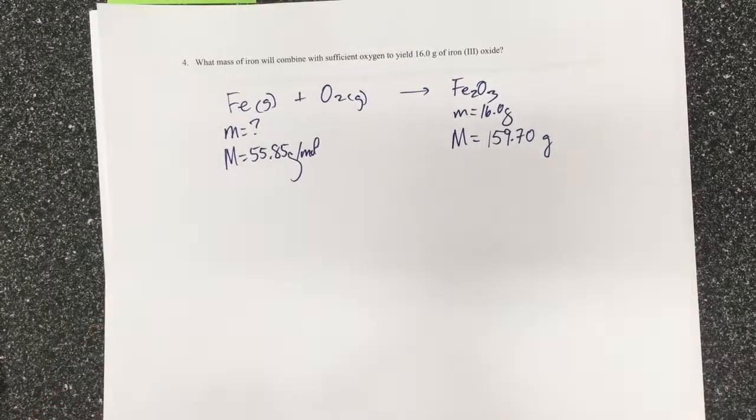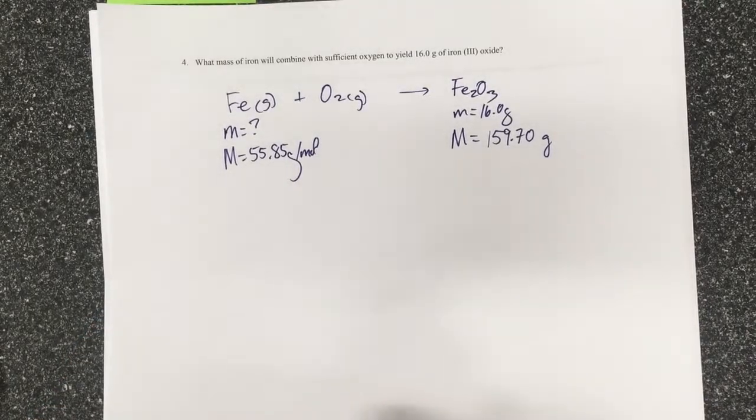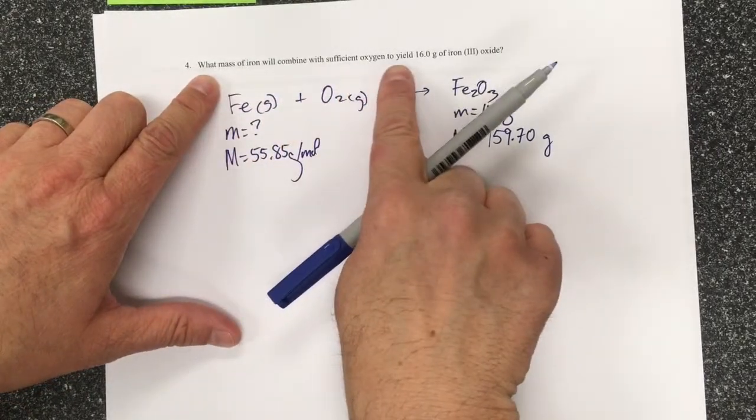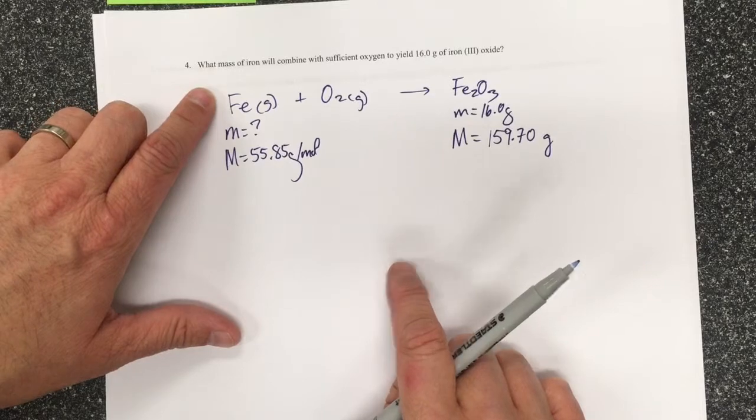In this, our fourth question in our first problem set for stoichiometry, it says what mass of iron will combine with sufficient oxygen to yield 16.0 grams of iron 3 oxide?